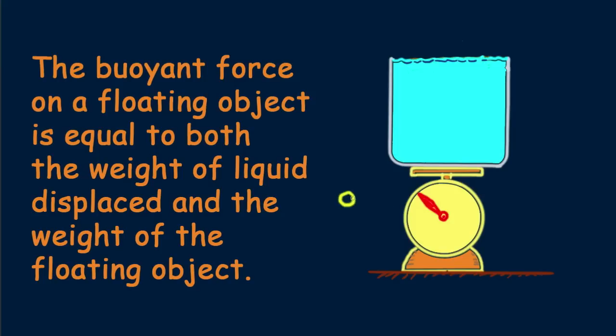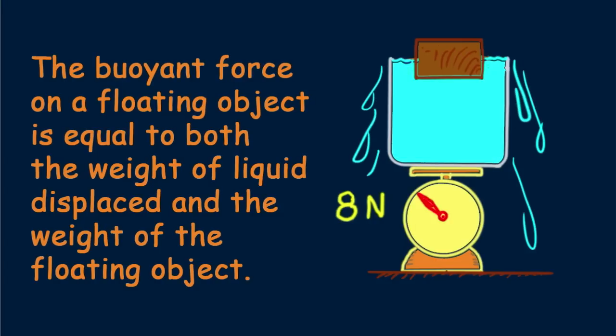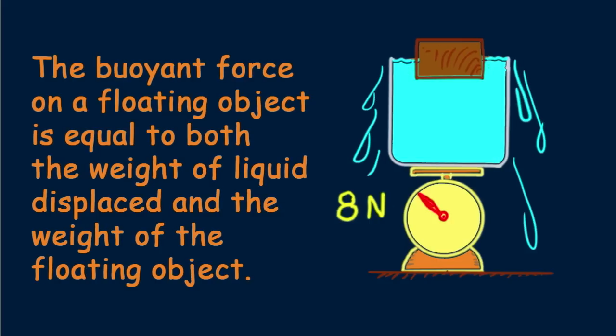Here's a beaker of brim-full water that weighs eight newtons. We place a piece of wood in the beaker. Water overflows. But you know what? The beaker still weighs eight newtons. If we put in a bigger piece of wood, more water overflows, and we see that the same brim-filled beaker still would weigh eight newtons. Whatever the weight of the floating block, an equal weight of water overflows.